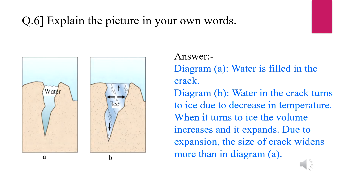Diagram A: water is filled in the crack. Diagram B: water in the crack turns to ice due to decrease in temperature. When it turns to ice, the volume increases and it expands. Due to expansion, the size of the crack widens more than in Diagram A.